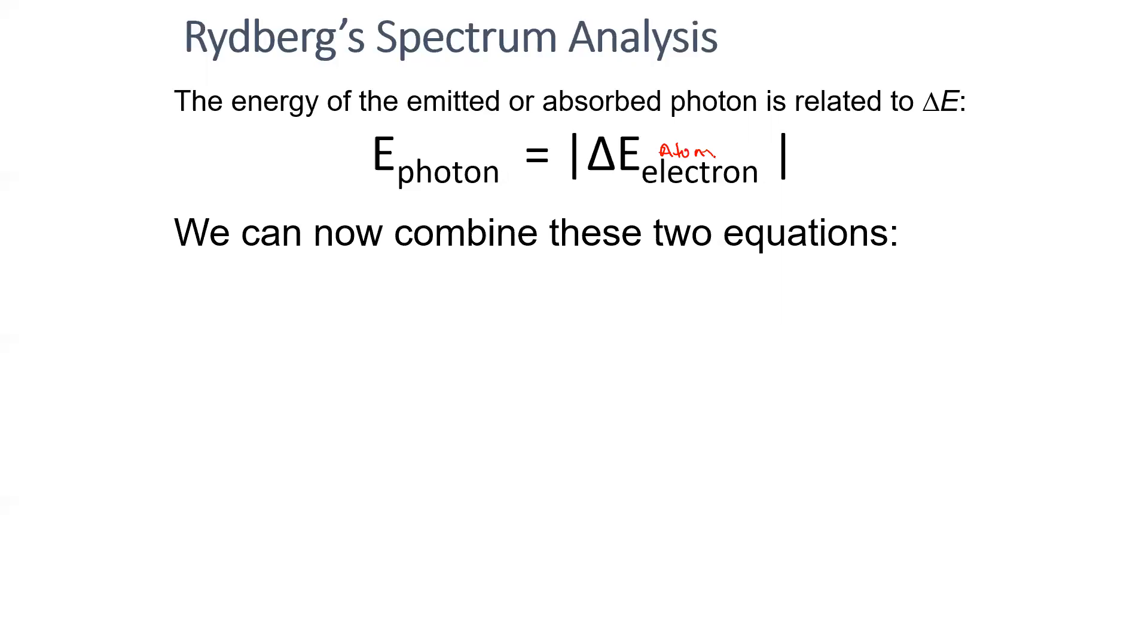So how can we combine these two equations? We use the energy of a photon, which, if you recall, energy of a photon of light is Planck's constant times the frequency of light. But we also know that the speed of light is equal to wavelength times frequency. If we want to rearrange this and solve for frequency, we get the speed of light divided by wavelength is my frequency, and I can now substitute that here.